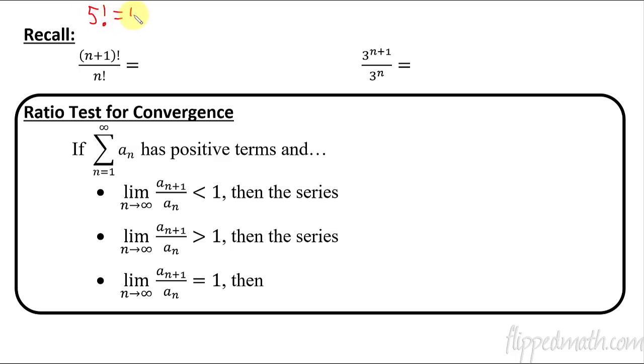for example, if I say 5 factorial, that's just 5 times 4 times 3 times 2 times 1, all the way down until you get to 1. So that's factorial.